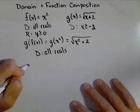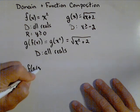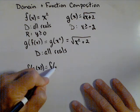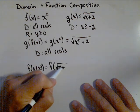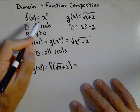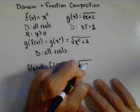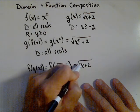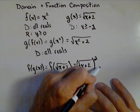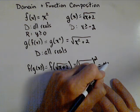Let's reverse the order. f of g of x. f of x, so now we're putting g of x, which is square root of x plus two, into f. So basically, we're squaring it. So square root of x plus two squared, which equals x plus two.